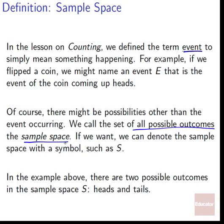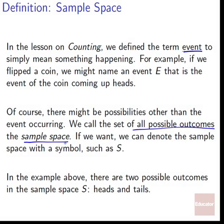We can denote the sample space with a symbol such as capital S. In the coin example, there are two possible outcomes: it comes up heads, or it comes up tails. So two sides to the coin means two things in our sample space. The event is simply heads coming up, but the sample space is everything that could occur — heads and tails.